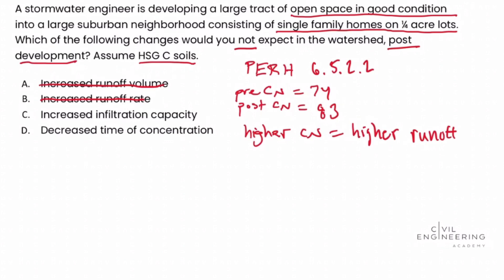Before committing to answer choice C, let's look at answer choice D: decreased time of concentration. Time of concentration refers to the amount of time it takes for sheet flow runoff to pond and pool together, then begin to channelize and run off as channelized flow. With higher runoff, we would expect a decreased time of concentration — water will more quickly pond and begin to run off as channelized flow.